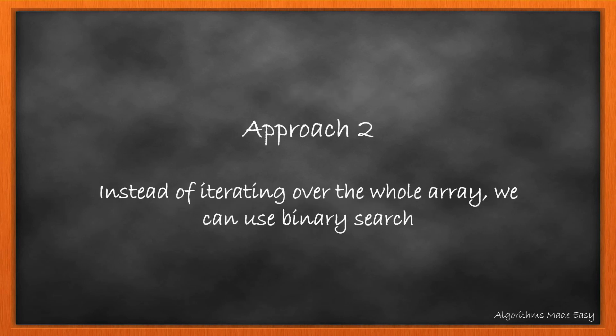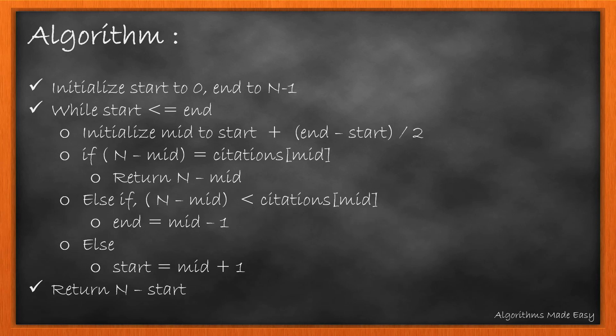Instead of iterating over the whole array, we can use binary search. For this, we initialize start to 0 and end to N-1. While start is less than or equal to end, we calculate the mid by using the formula shown. And if N-Mid is equal to the value of the citation at mid, we simply return N-Mid. Else if the value is less than the citation at mid, we set the end to mid-1. Else we set the start to mid+1. At the end, we return the value for N-start.